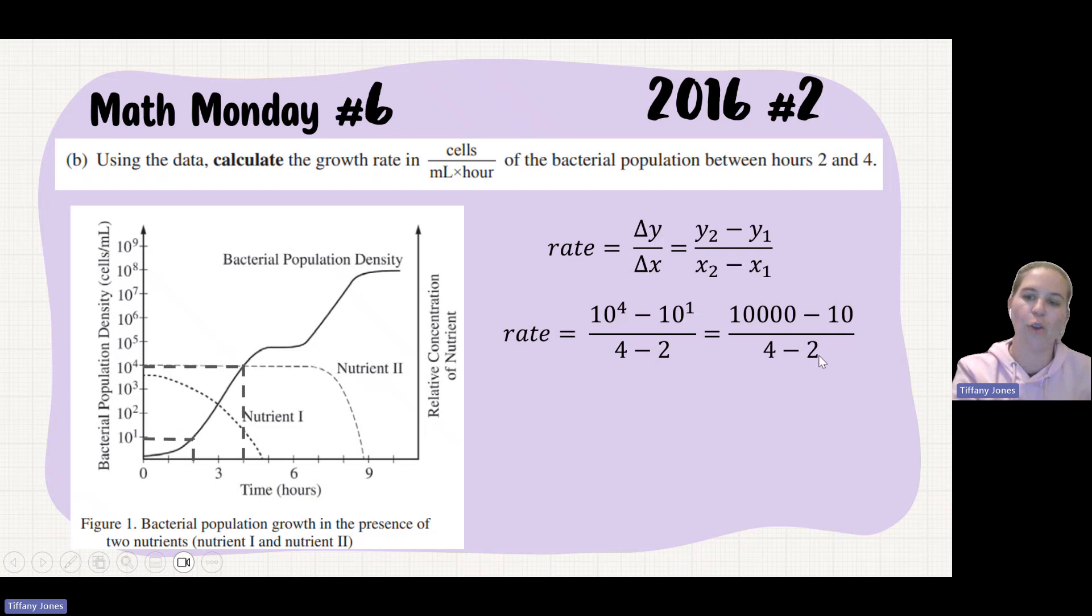And that, of course, just carries over. So 10,000 minus 10 is 9,990. And then we divide that by 2. We get 4,995.